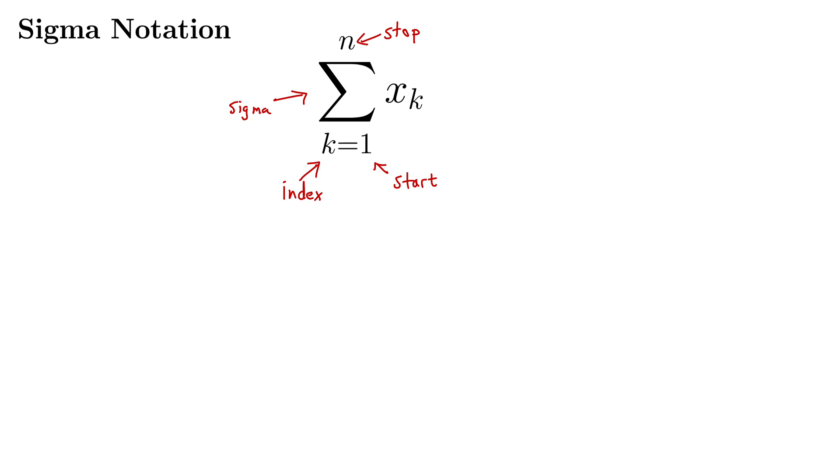And then x sub k is some formula involving k's. So how this works is you start at 1 and you put 1 into the formula and see what that gives you and log that. And then you put 2 into the formula, see what that gives you and add it. Then put 3 into the formula, see what that gives you and add that, 4 into the formula, see what that gives you, add that, and so on until you hit whatever stopping point you have.